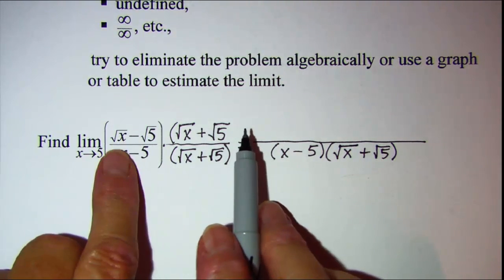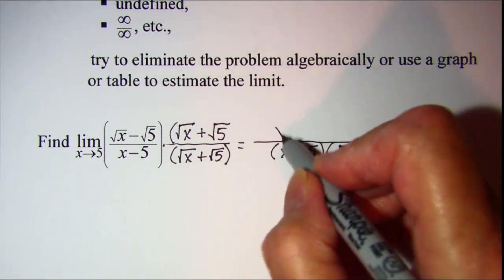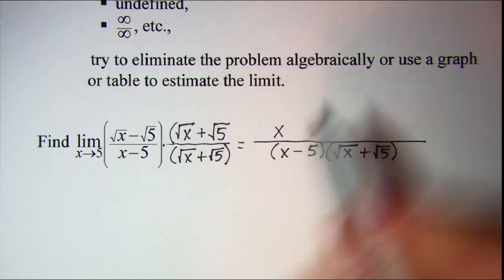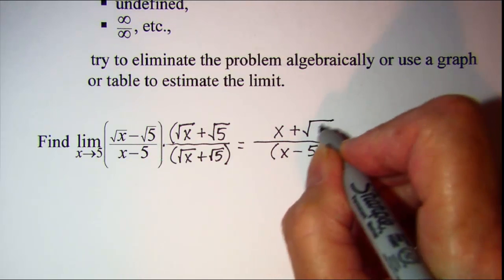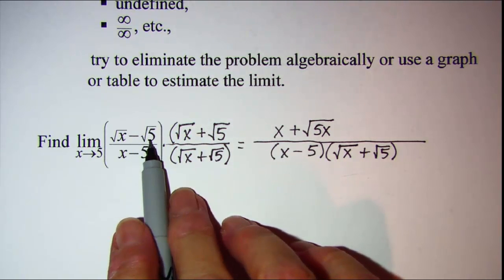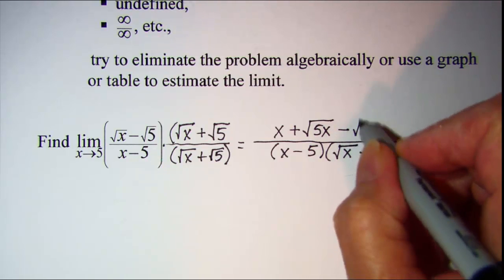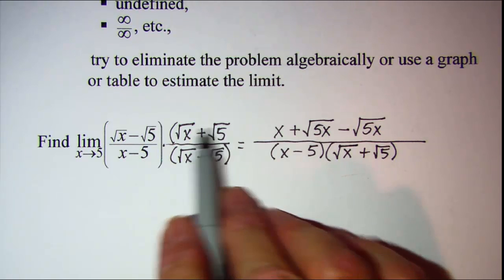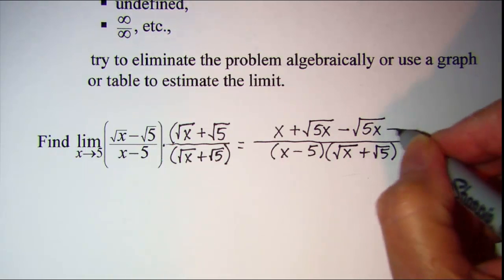Now in the numerator, we'll just use FOIL. Square root of x times square root of x is x. Square root of x times square root of 5 is square root of 5x, and that's positive. And then my inner product, negative square root of 5 times square root of x is negative square root of 5x. And then my last terms multiplied together, negative root 5 times a positive root 5 is negative 5.